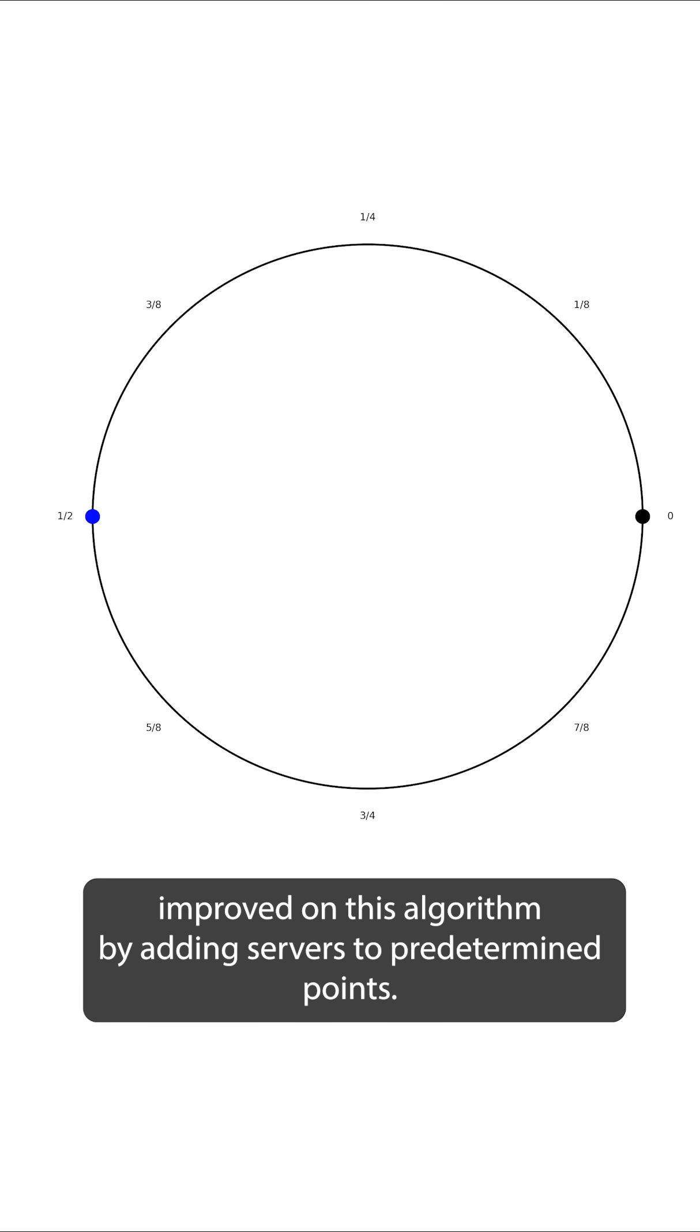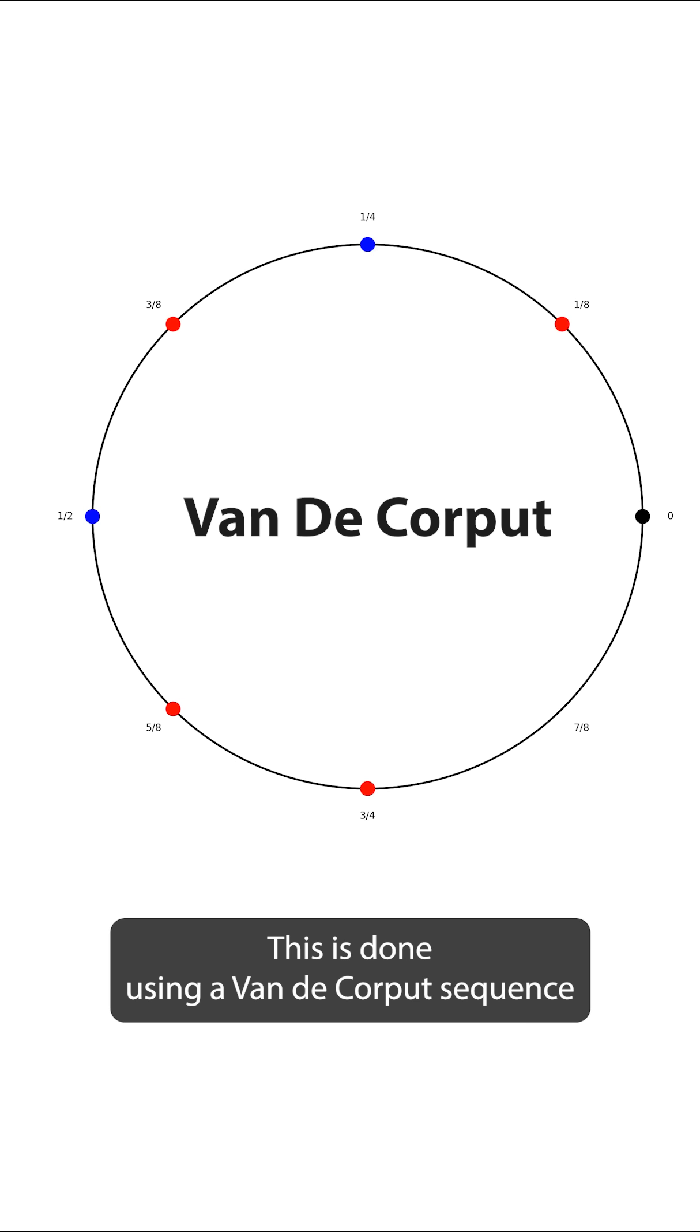Google has now further improved on this algorithm by adding servers to predetermined points. This is done using a van de Corput sequence, which constrains the load variance among servers.